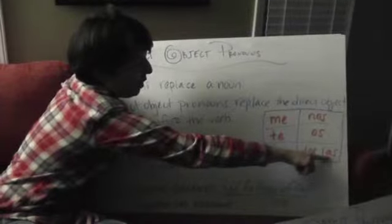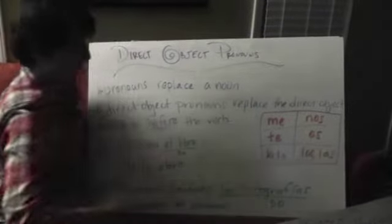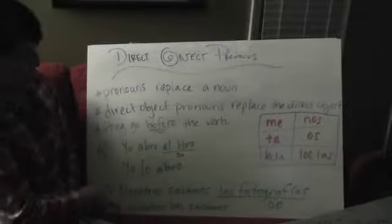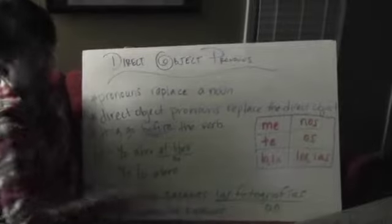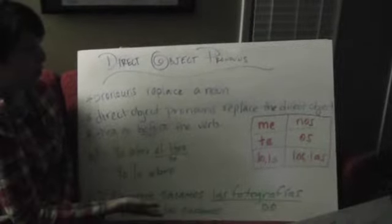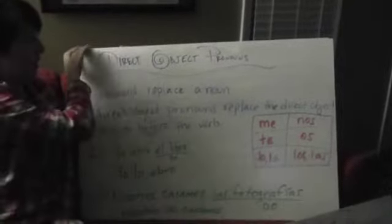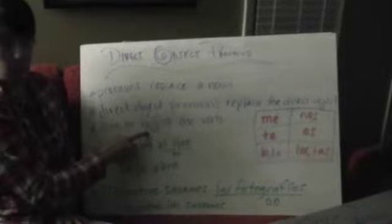For example two: nosotros sacamos las fotografías. Las fotografías is feminine plural, so we use las to replace it, and we get nosotros las sacamos. That is how you use the direct object pronoun — it goes before the verb.